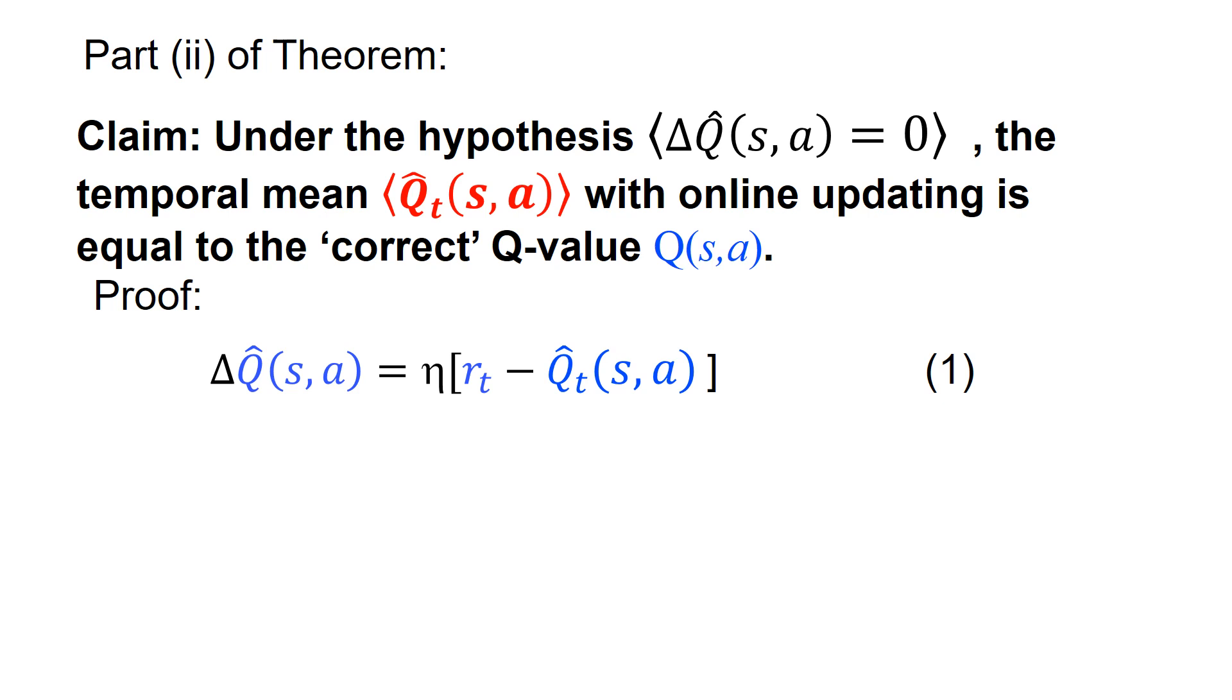So the claim is under this hypothesis. So what I need to do is, I need to put averaging signs over this and then the averaging signs go on the right hand side. Remember this Q hat is now changing every time step. It's not frozen. It's changing every time step. So I cannot just assume that it doesn't change, but we know according to the hypothesis that the overall thing is zero.